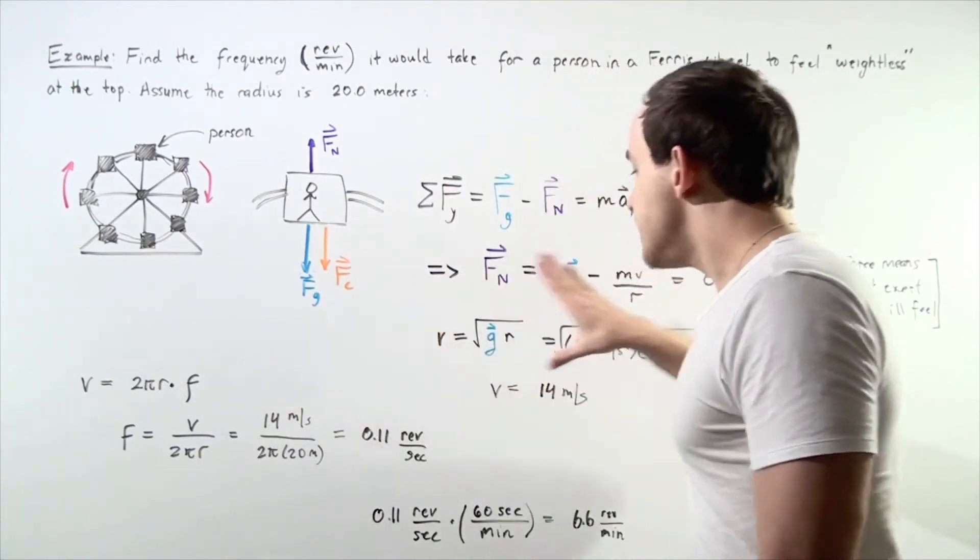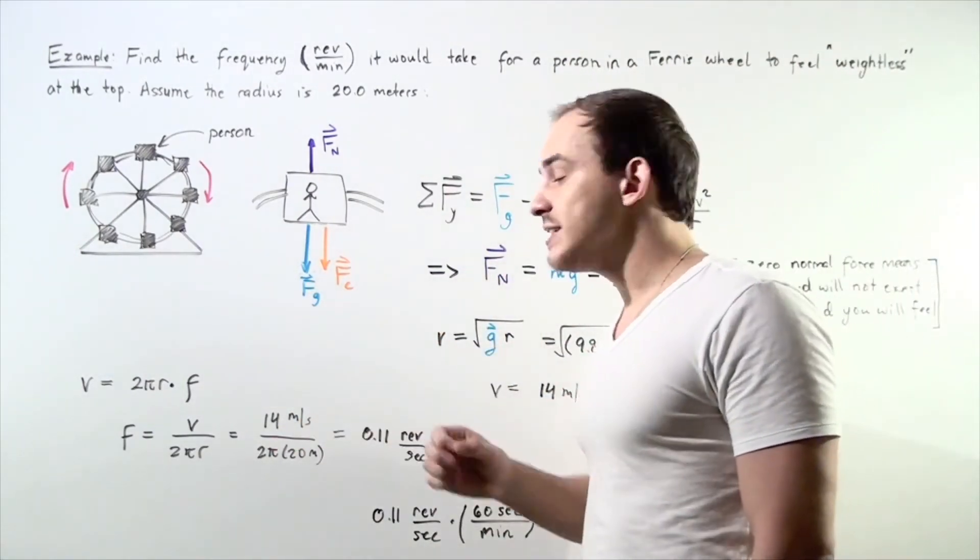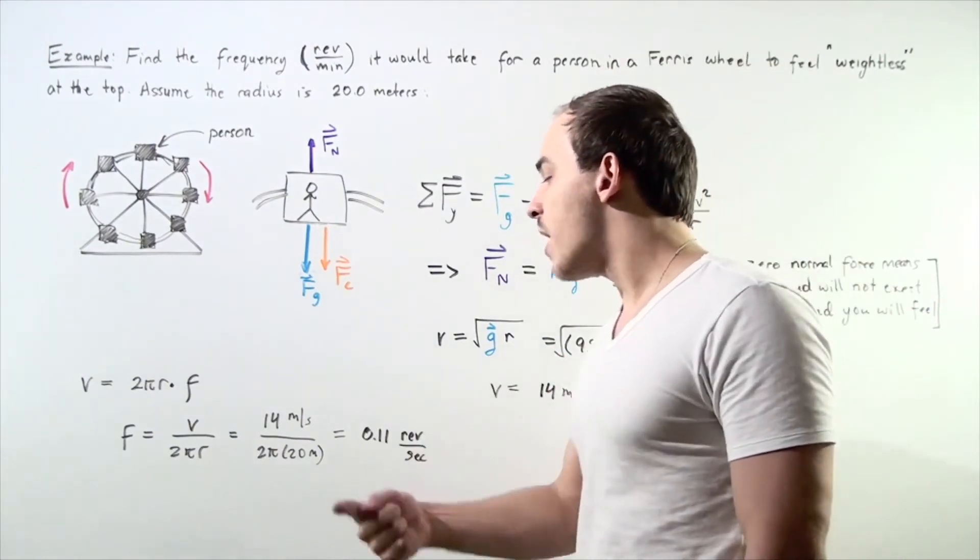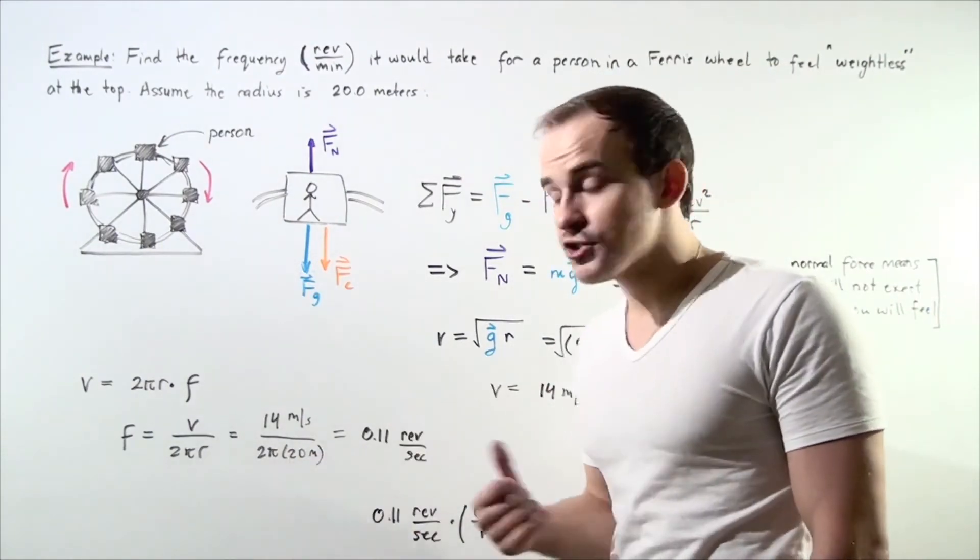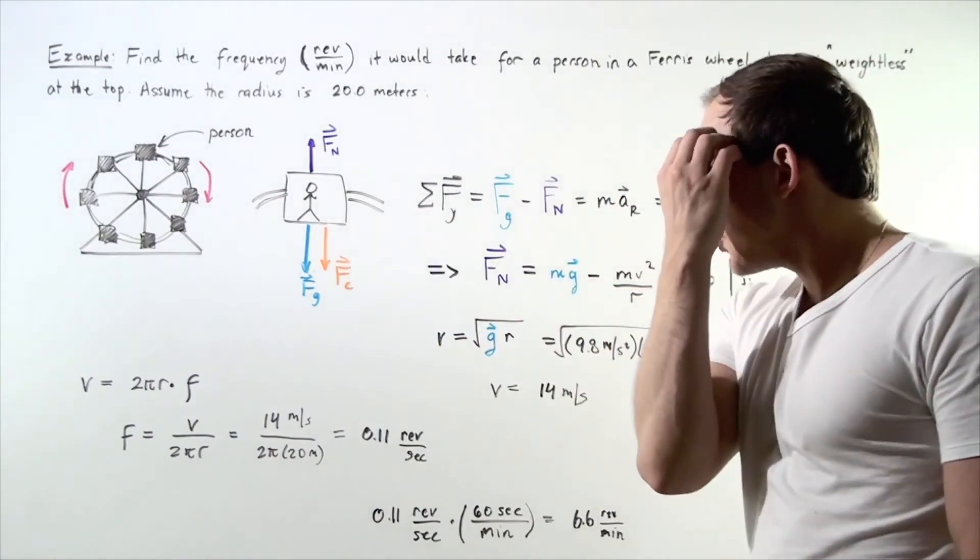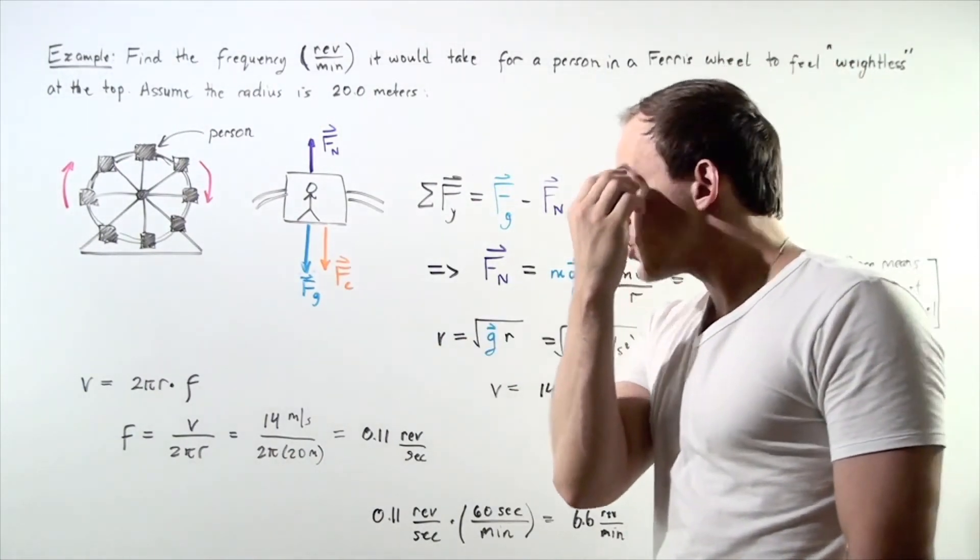We found that our velocity is 14 meters per second. Divide that by 2 times π times radius of 20 meters and we get the following frequency: 0.11 revolutions per second.